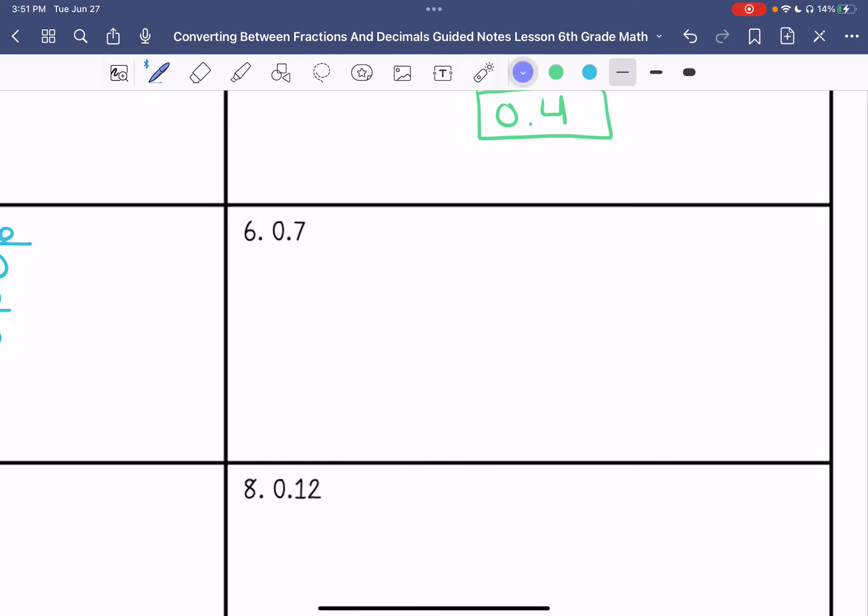This is 0.7 tenths. So 7 over 10. We can't simplify that anymore. So that's my answer.